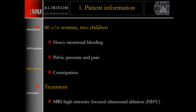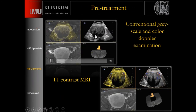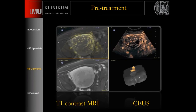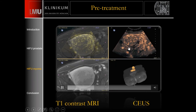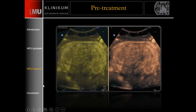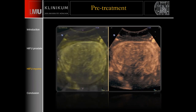The first myoma patient is a 46-year-old woman with two children who has heavy bleeding and pain, so we made the decision to treat her with HIFU therapy. We see the large uterus with the myoma inside. On one side is the MRI, and on the other side the grayscale ultrasound, with some vascularization visible in the peripheral part. On contrast, we see nice perfusion of the complete uterus including the myoma. The MRI and ultrasound borders match well.